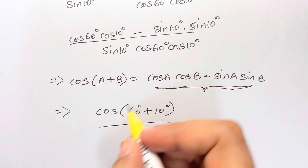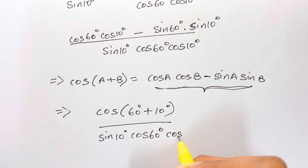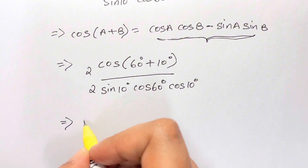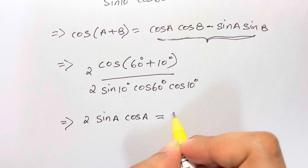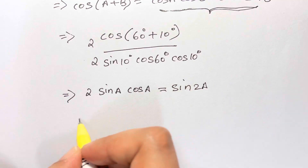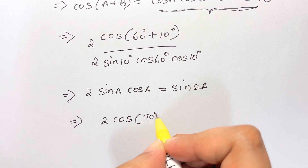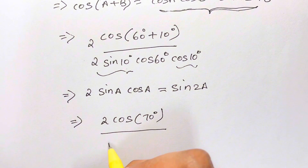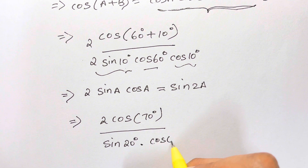The denominator is sin(10°)·cos(60°)·cos(10°). Now multiply and divide by 2. Since 2·sin A·cos A = sin(2A), the denominator becomes sin(20°)·cos(60°). So we have 2·cos(70°) over sin(20°)·cos(60°).